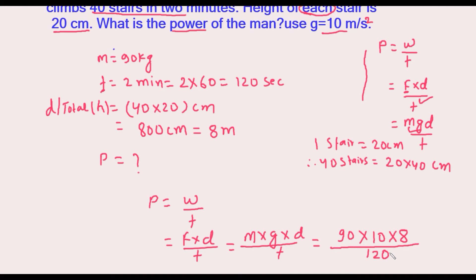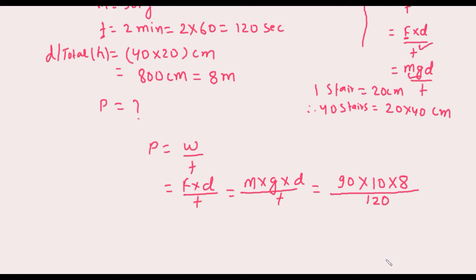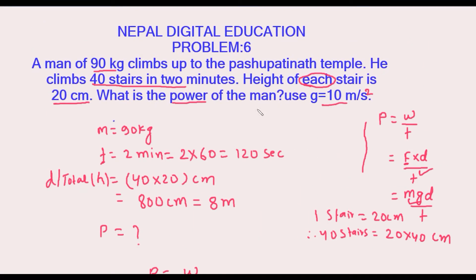Now just solve it: 90 into 10 into 8, divided by 120, gives us 60. The unit of power is watt, so the required power is 60 watt.